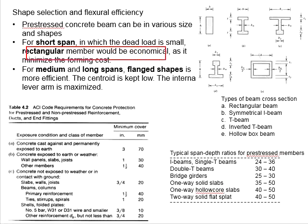Rectangular members would be economical as they involve minimum forming costs. The rectangular sections are easier to fabricate, especially in terms of the shear reinforcement. The casting of rectangular sections is also simpler, as adequate spacing is provided for pouring and compacting the concrete.